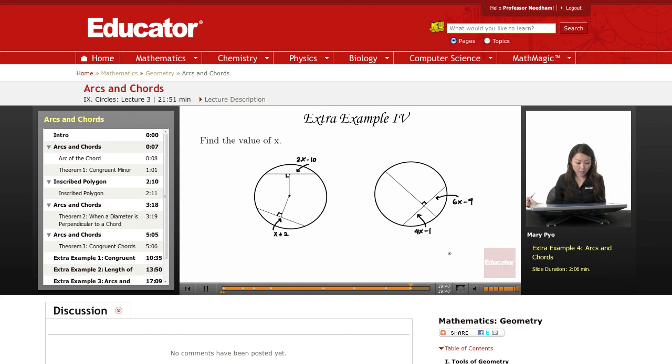Okay, and then the last one, find the value of x. So here, you can't say that these cords are congruent, so you'd have to say that they're equidistant. Then I can say that this cord is congruent to this cord, and then you're going to make them equal to each other. 2x minus 10 equals x plus 2. And this will be x equal to 12.